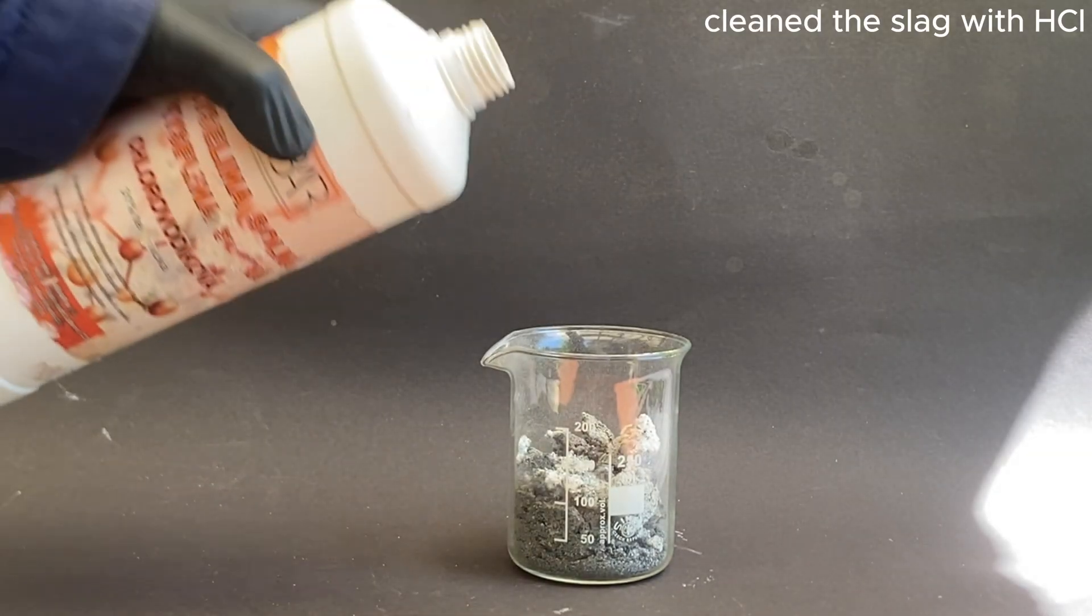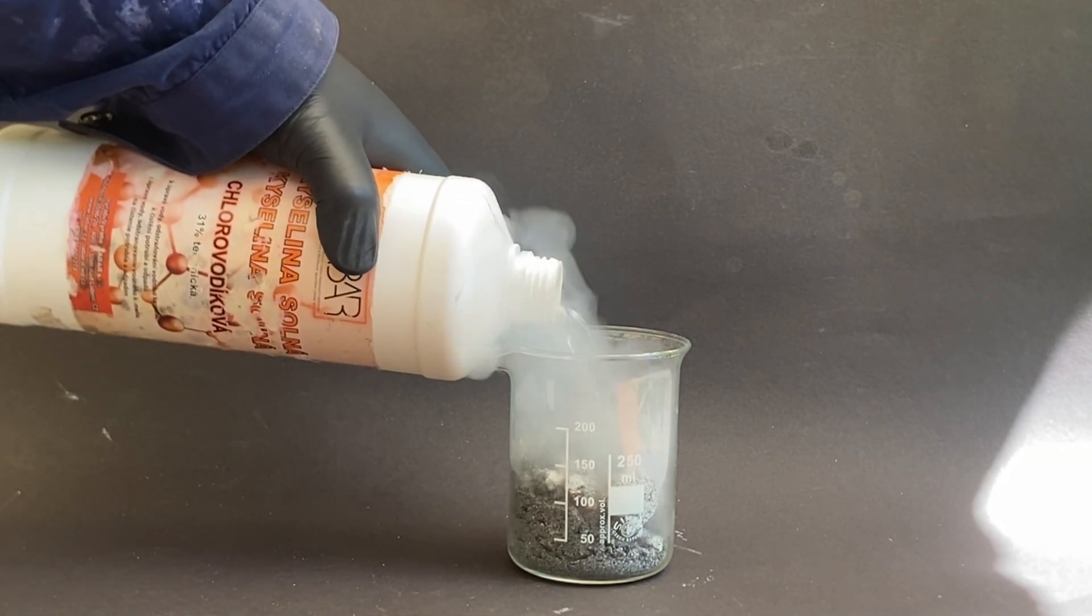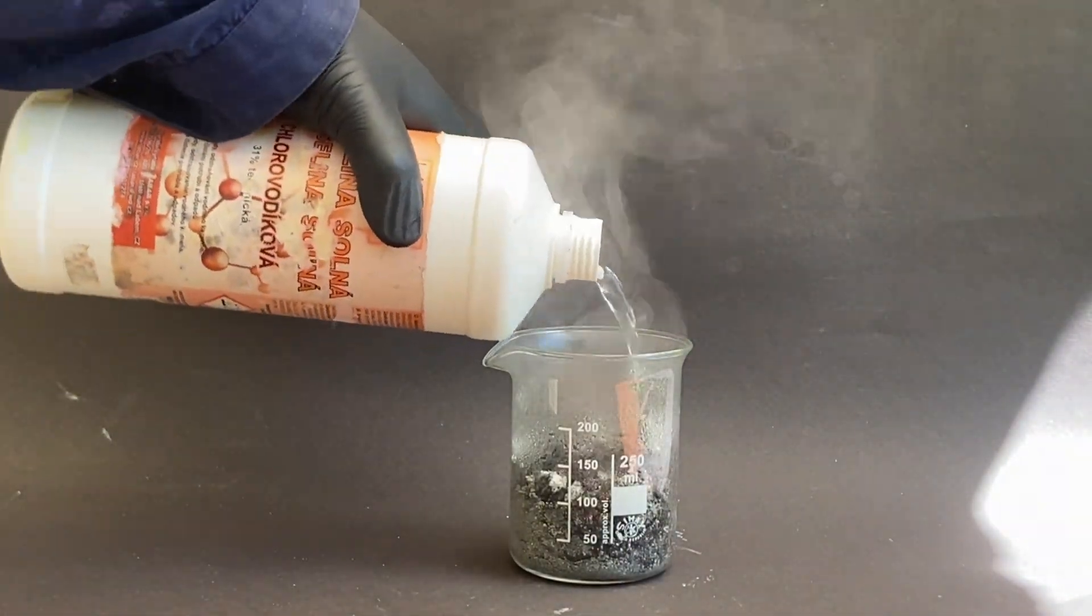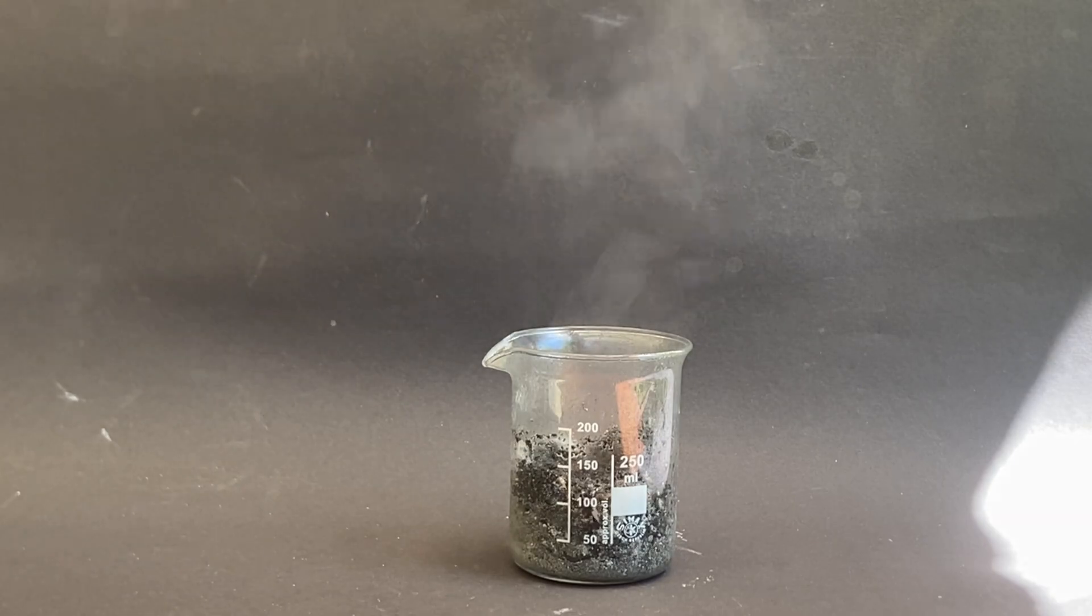Next I dissolved the magnesium oxide in hydrochloric acid. This reaction was quite violent because I didn't let the slag cool down enough and nearly resulted in my beaker overflowing.